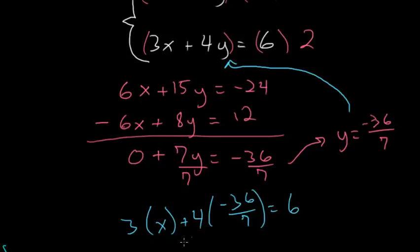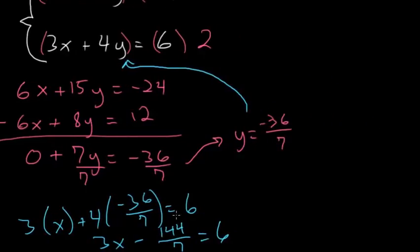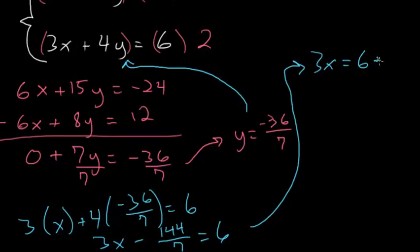Then simplifying, we have 3x minus 144 divided by 7, and this equals 6. And then adding that number 144 over 7 to each side, we have 3x equals 6 plus 144 over 7.